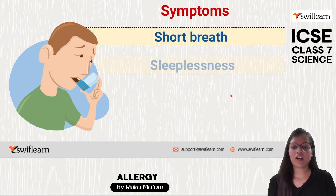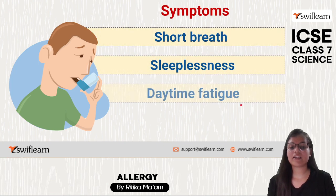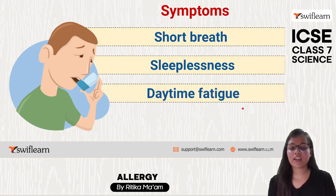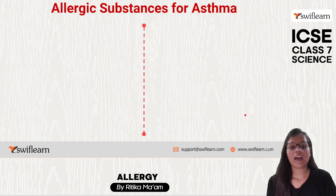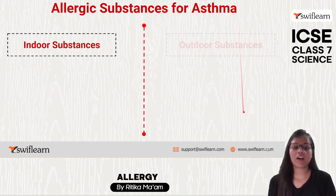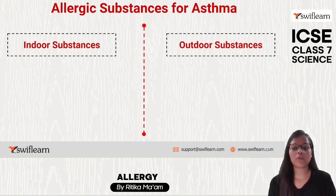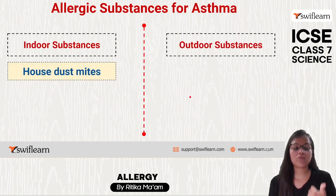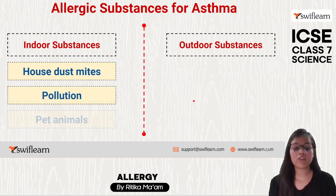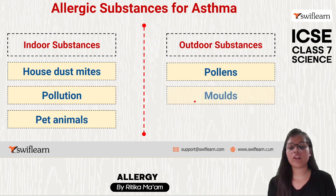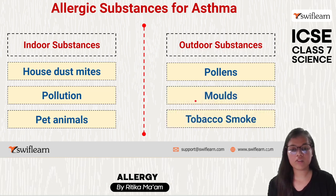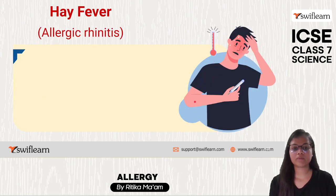Symptoms of asthma are shortness of breath, sleeplessness, daytime fatigue, and reduced stamina — our energy drastically goes down in asthma. Allergic substances for asthma include indoor substances such as house dust mites, pollution, and pet animals, and outdoor substances such as pollens, molds, or tobacco smoke.